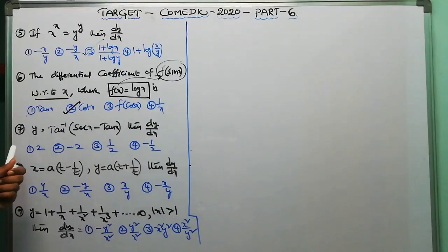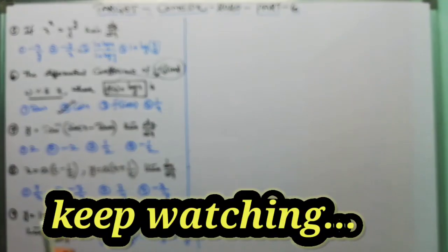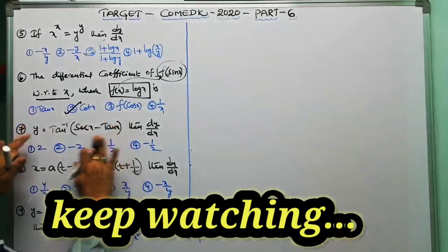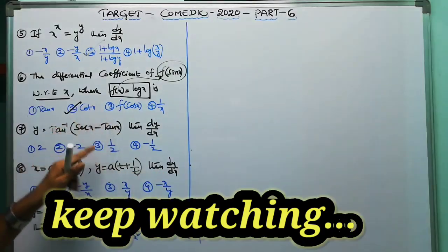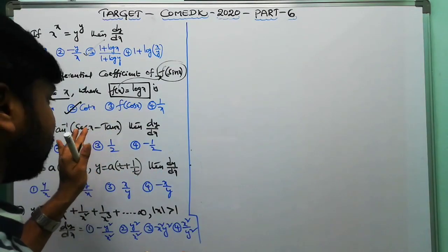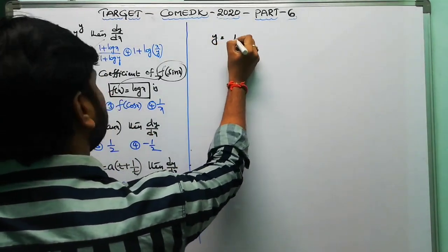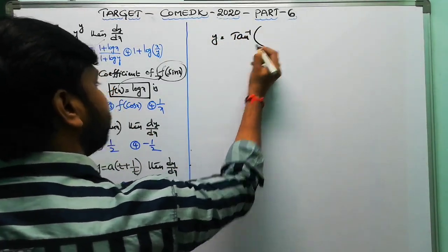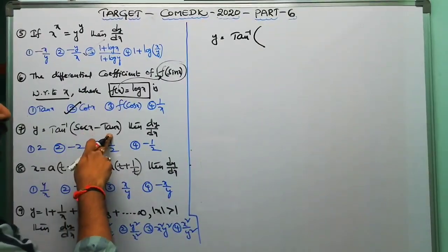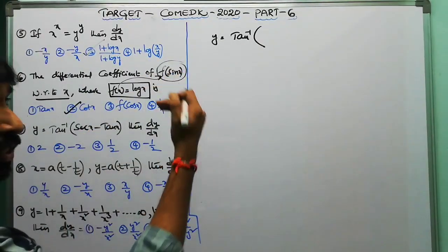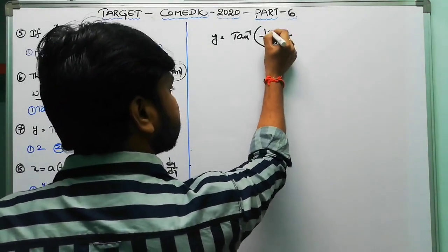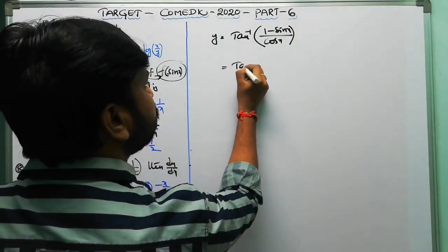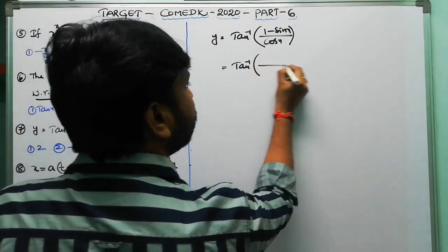Question 7: y equals tan⁻¹(sec x − tan x), find dy/dx. Don't apply the direct derivative because the derivative of tan⁻¹x is 1/(1+x²) and the chain rule makes it very complicated. Instead, simplify first before differentiating. sec x is 1/cos x and tan x is sin x/cos x.